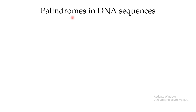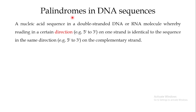The first thing you need to understand is what palindromes are. A palindrome, in the context of a nucleic acid sequence in a double-stranded DNA or RNA molecule, is when you are reading in a certain direction — for example from the five prime end to the three prime end on one strand — and that sequence is identical to the sequence in the same direction on the complementary strand. We usually call this a palindromic sequence.